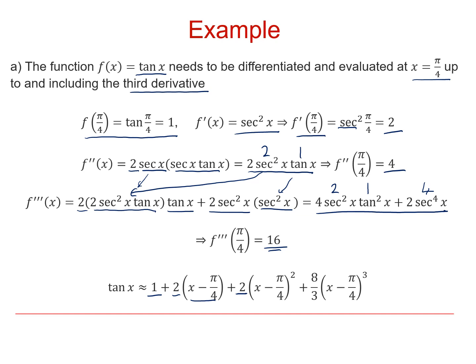16 is our third derivative at π over 4. And this time we're dividing by 3 factorial. 16 divided by 3 factorial reduces down to 8 over 3. And we're multiplying by x minus π over 4 cubed. And that's the series that we wanted to generate.